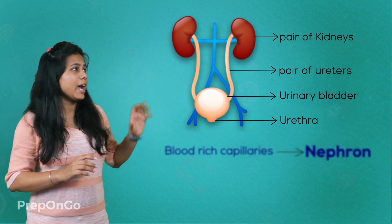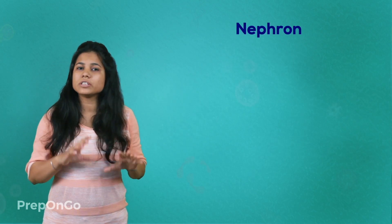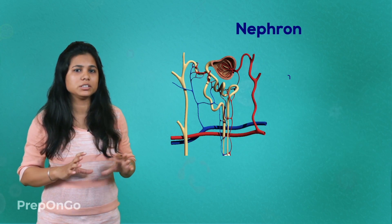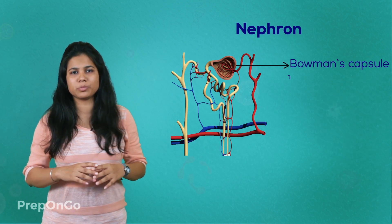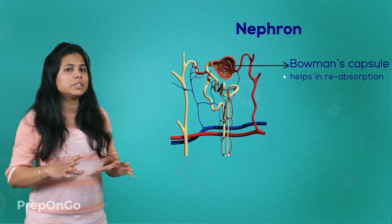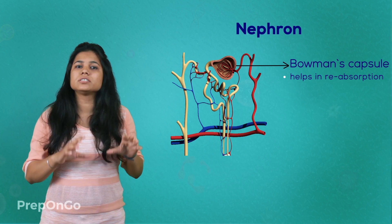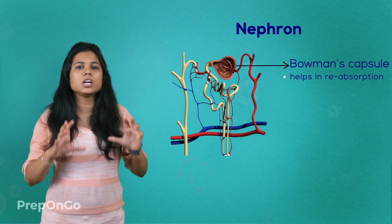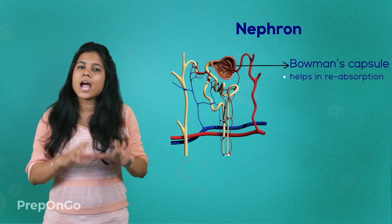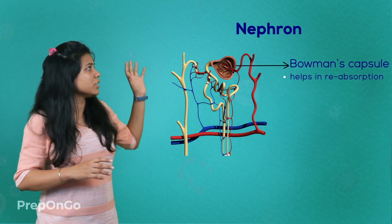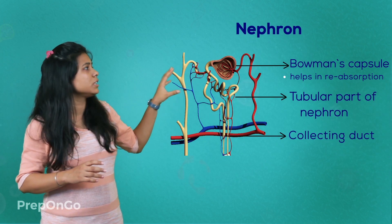The kidney has many blood-rich capillaries which we call nephrons. These nephrons are richly supplied with blood capillaries and have a Bowman's capsule. The Bowman's capsule plays an important role in the reabsorption process. Reabsorption means that whatever waste material has reached the kidney, useful substances such as glucose, amino acids, and essential minerals that have by chance come with the waste materials are reabsorbed and transferred back to the body, while the remaining waste materials are passed on through the further filtration process.